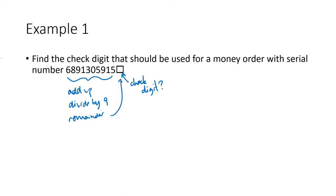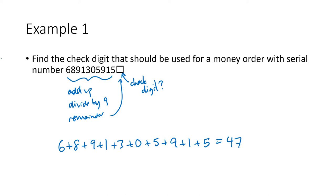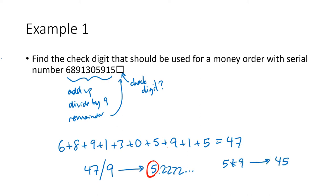So I'm going to add up these digits: 6 plus 8 plus 9 plus 1 plus 3 plus 0 plus 5 plus 9 plus 1 plus 5. I add all those up and I get 47. The next step is to take 47 and divide it by nine. When I take 47 divided by nine on my calculator, I get 5.22222. That means that 47 is five groups of nine with some leftover. Five times nine is 45. 47 minus 45 gives us our remainder, which is two. So two should be the check digit that goes in that empty box, and that's the number that makes this entire 11-digit serial number valid.